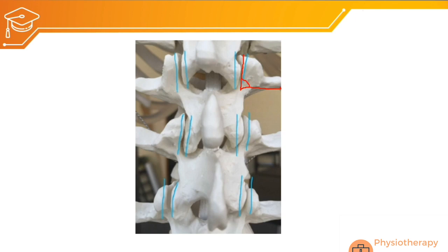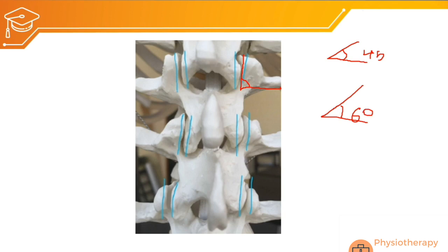The facet joint orientation in the lumbar spine is more in the sagittal plane compared to the thoracic and cervical regions. In the cervical spine the facet orientation is around 45 degrees to the horizontal plane; in the thoracic spine it is around 60 degrees; whereas in the lumbar spine it is nearly 90 degrees. This means there is less chance of rotation at the lumbar spine.